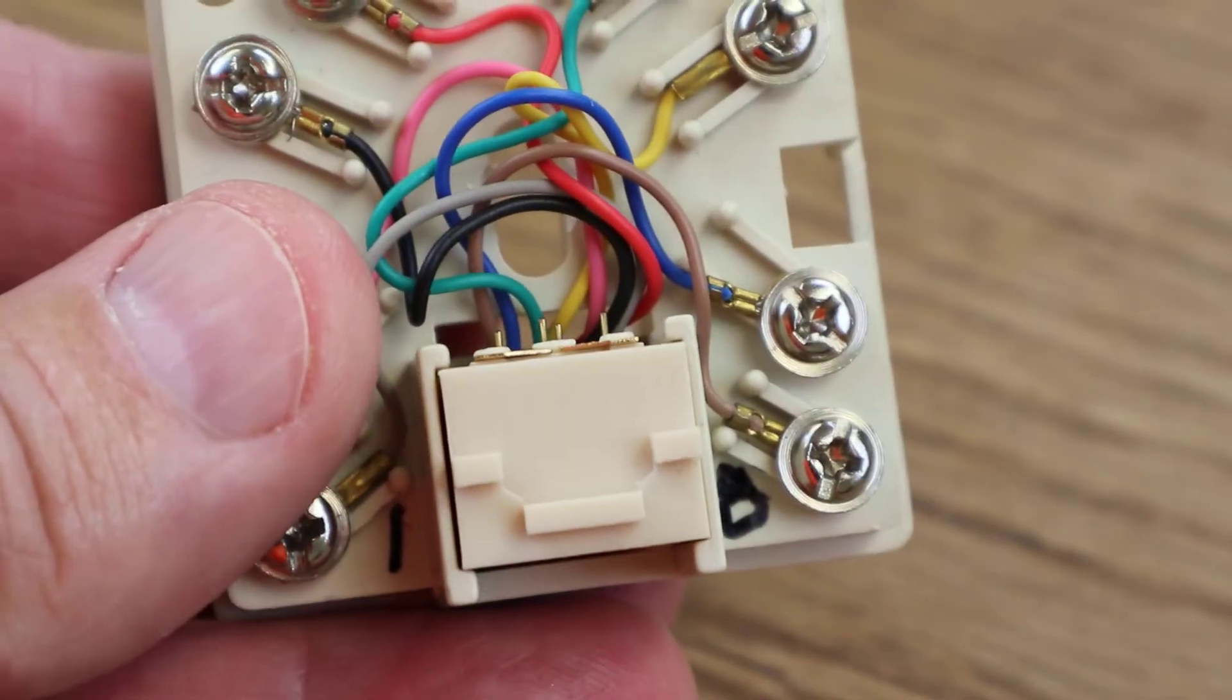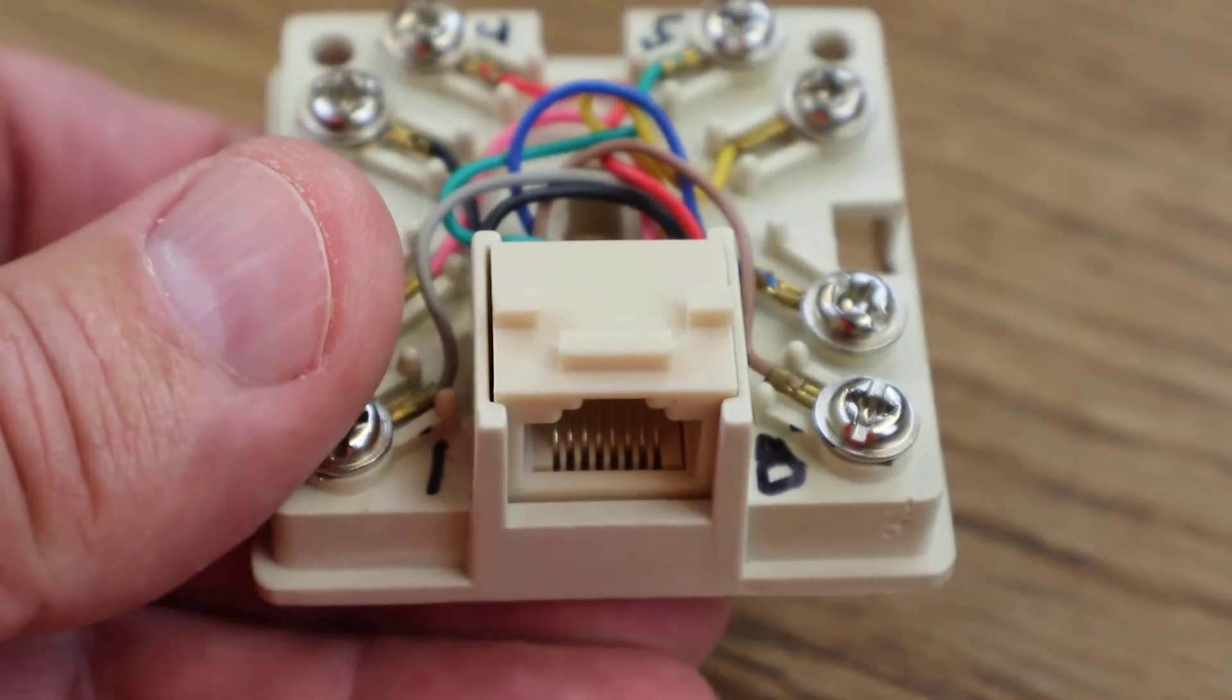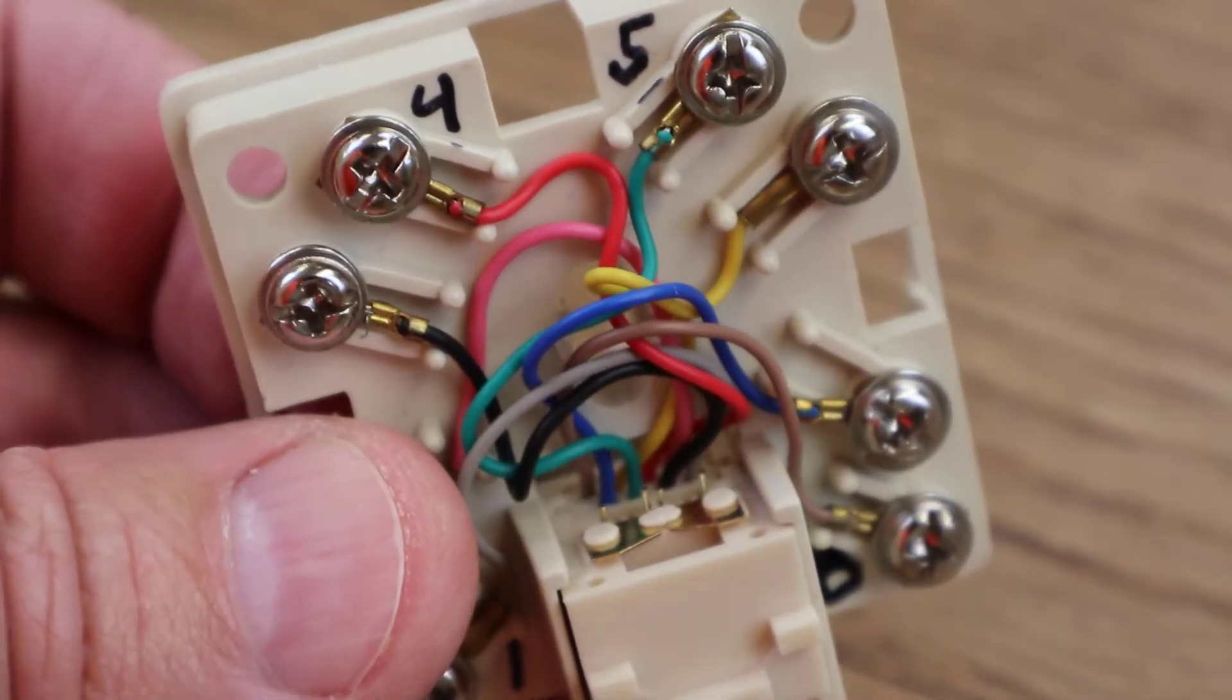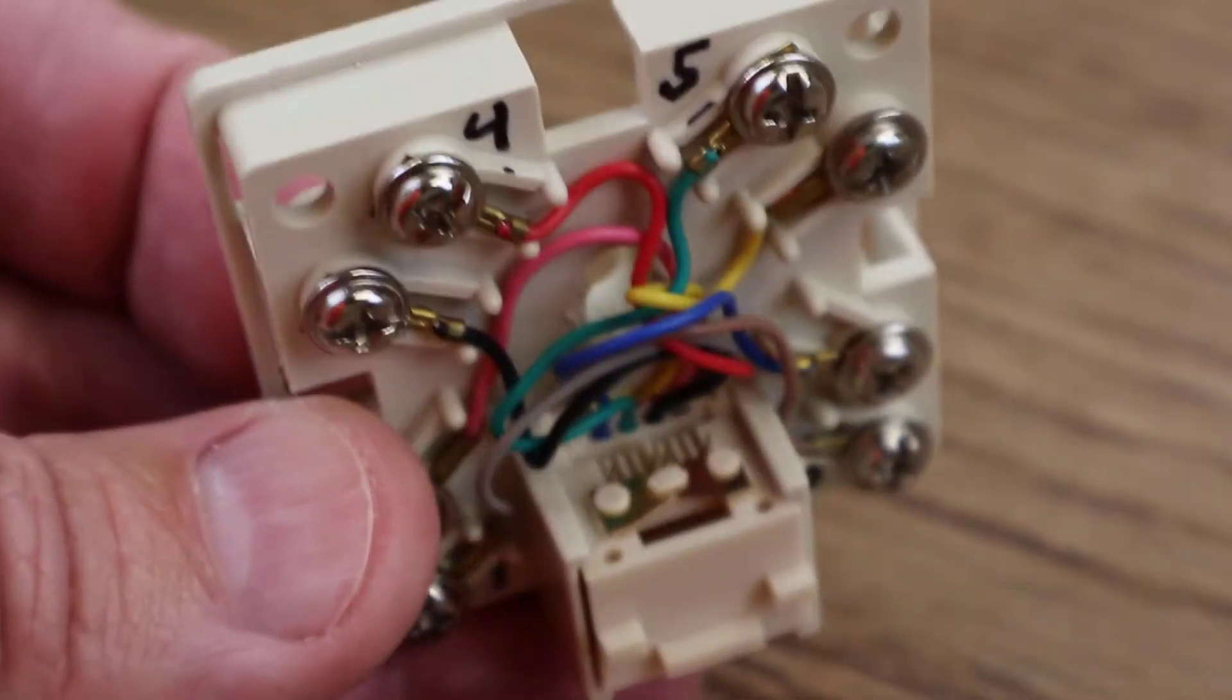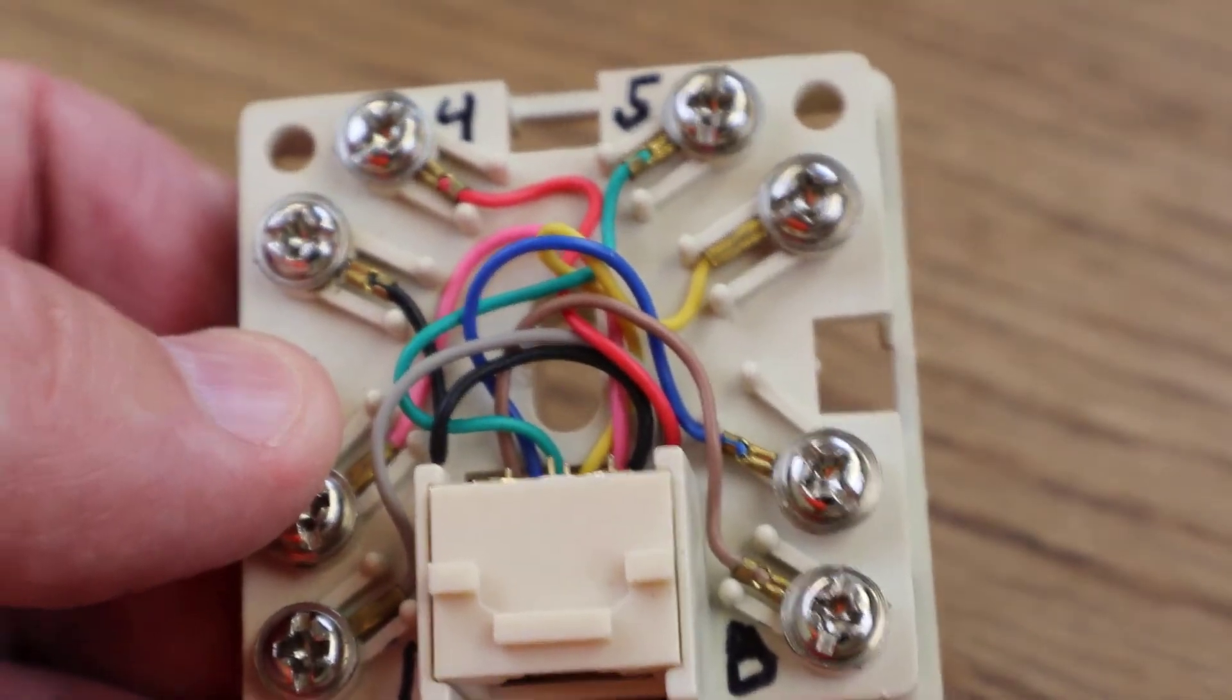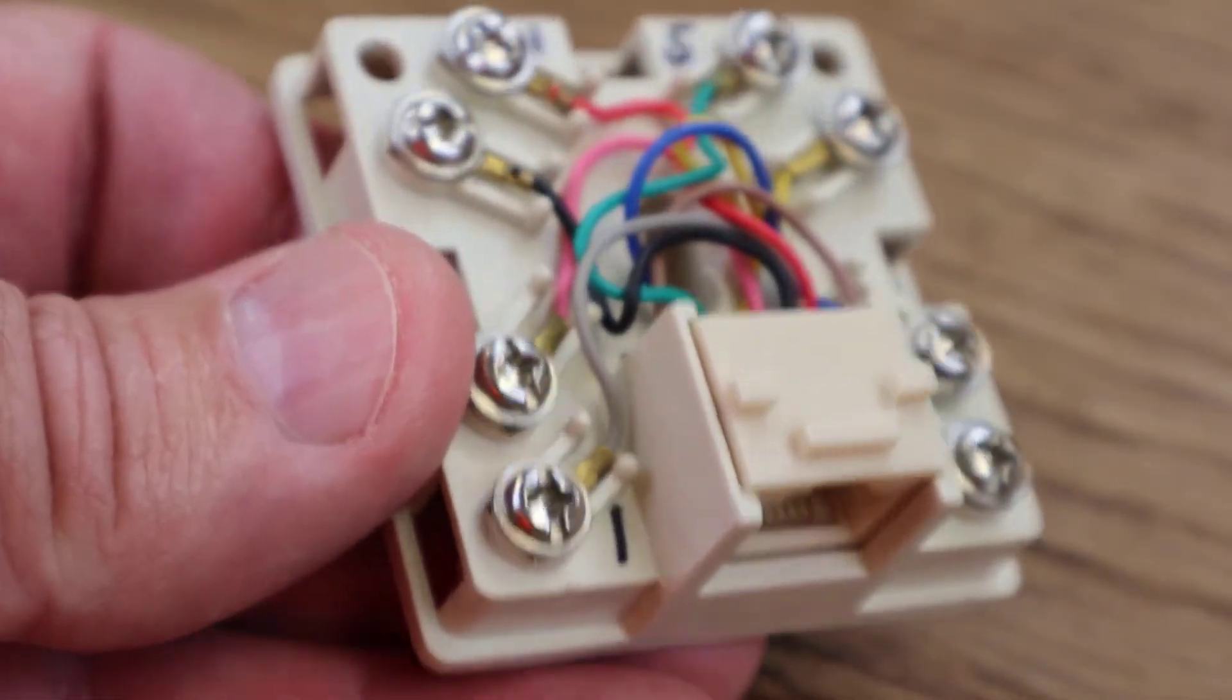Now, what that does is that creates a situation where if you plug a device into this, your routing goes like we taught. But if you don't plug a device into this, it stays just like this, which causes whatever you have connected to pin five to go out on pin eight and whatever you have connected to pin four go out on pin one.